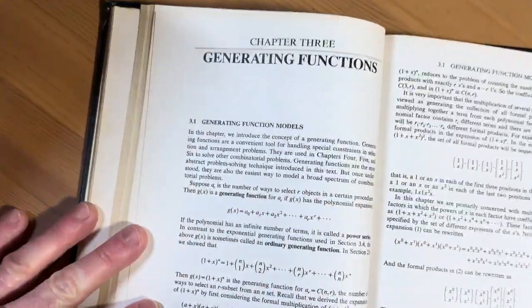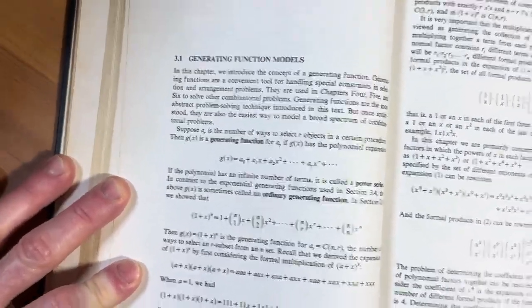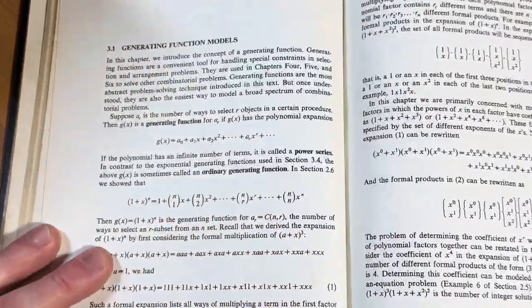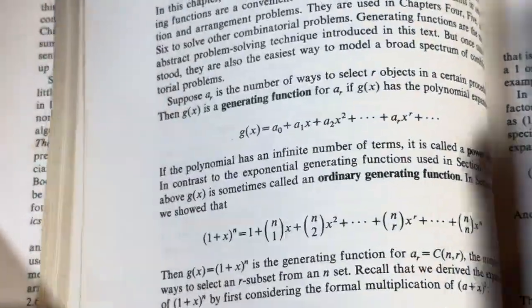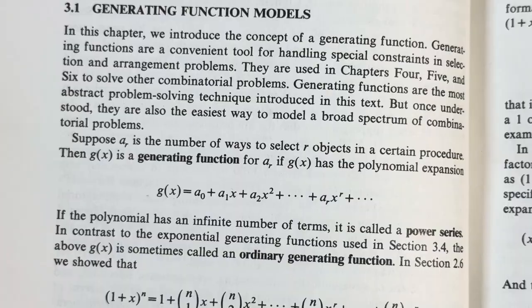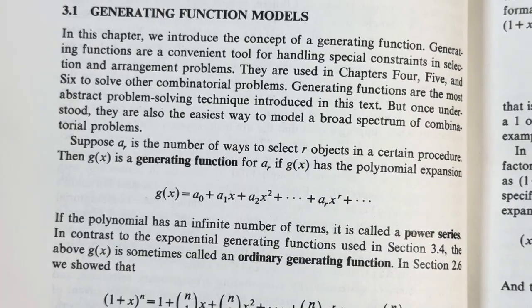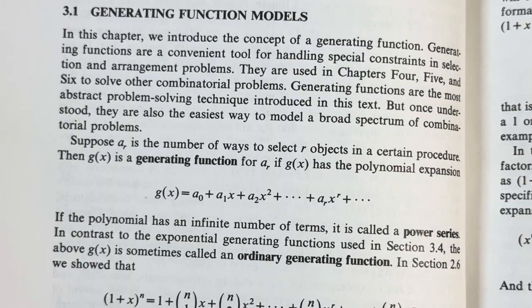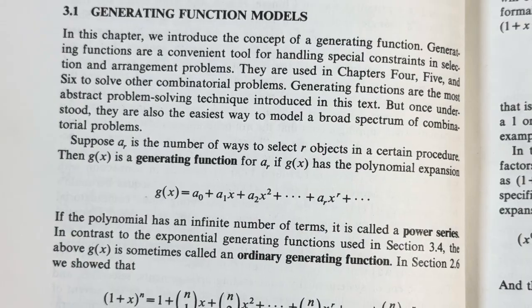Generating function models. Let's take a look at this. It says here, let's read this together. Suppose a_r is the number of ways to select r objects in a certain procedure. Then g(x) is a generating function for a_r if g(x) has the polynomial expansion.